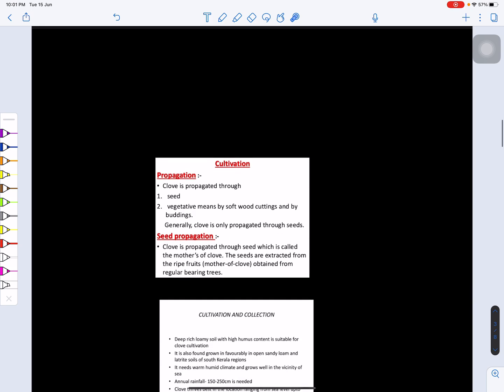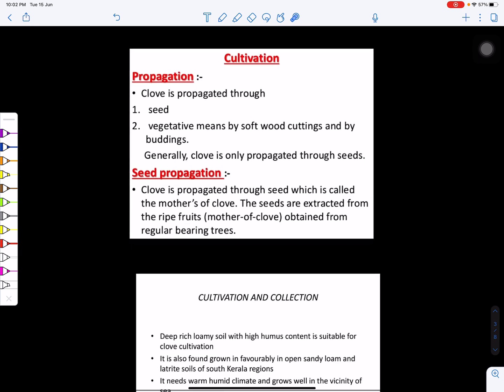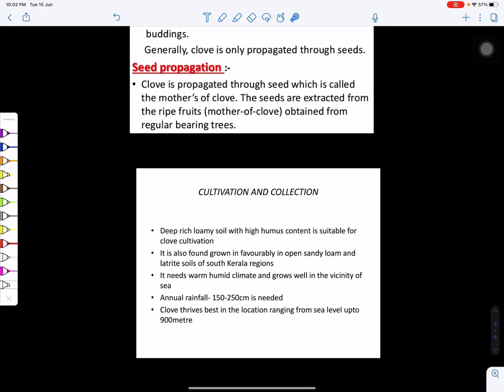Now we can cultivate or propagate this plant either by softwood cuttings or by buddings, or we can also propagate with the help of seed. Seed can be used for propagation of clove or it can be by vegetative means.